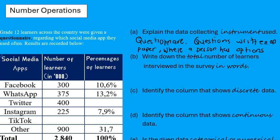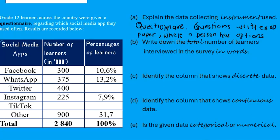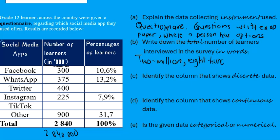Write down the total number of learners interviewed in the survey. It looks like the total is 2,840, but remember all numbers in this column are given in thousands. So the actual number is 2,840,000 once you add the three zeros. So the answer is 2,840,000.